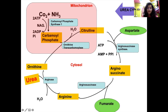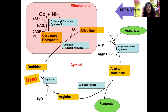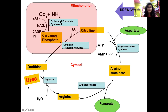In reaction four, argininosuccinate is cleaved by the enzyme argininosuccinate lyase to form arginine and fumarate. Fumarate enters the TCA cycle. Arginine is then cleaved in the last step of the urea cycle by the enzyme arginase to form urea. Arginase is present only in the liver — that is why the urea cycle occurs only in the liver and not in other tissues. This reaction also reforms ornithine, which can combine again with carbamoyl phosphate, allowing the urea cycle to continue repeatedly.